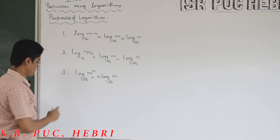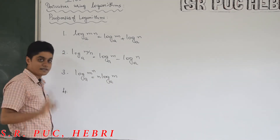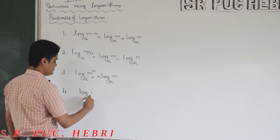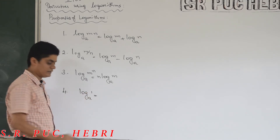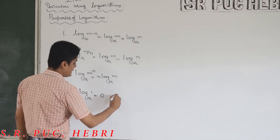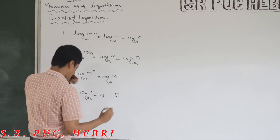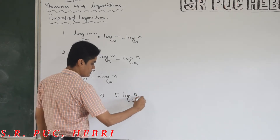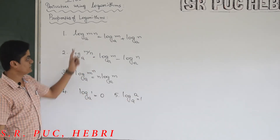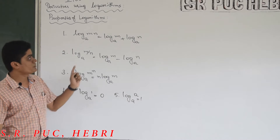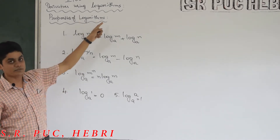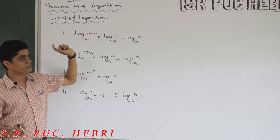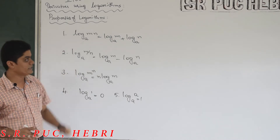Along with these, two standard logarithms you should remember. First: log of 1 to the base a is always 0. Second: log of a to the base a is equal to 1. So with these five pieces of information, I am going to explain how to use logarithm in derivatives and also why this is required in differentiation.